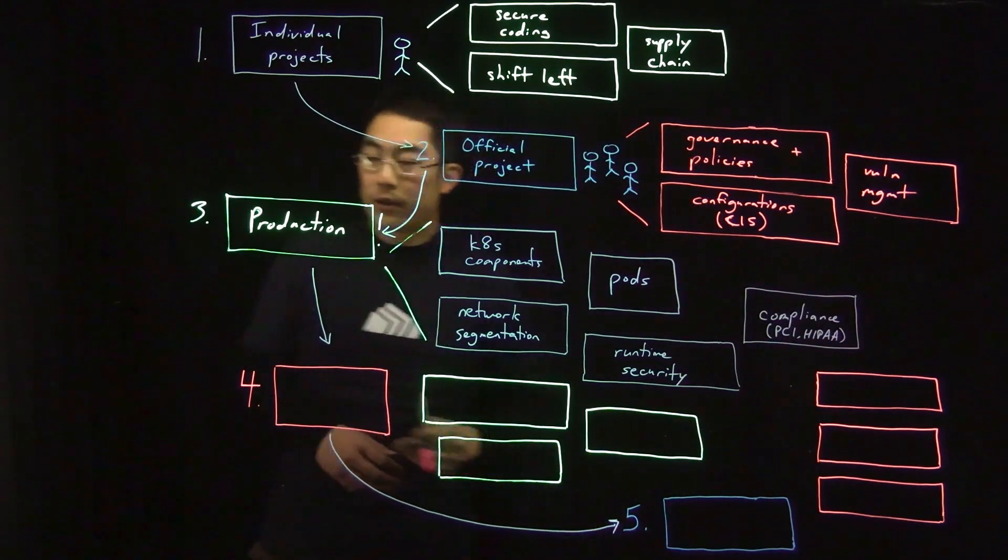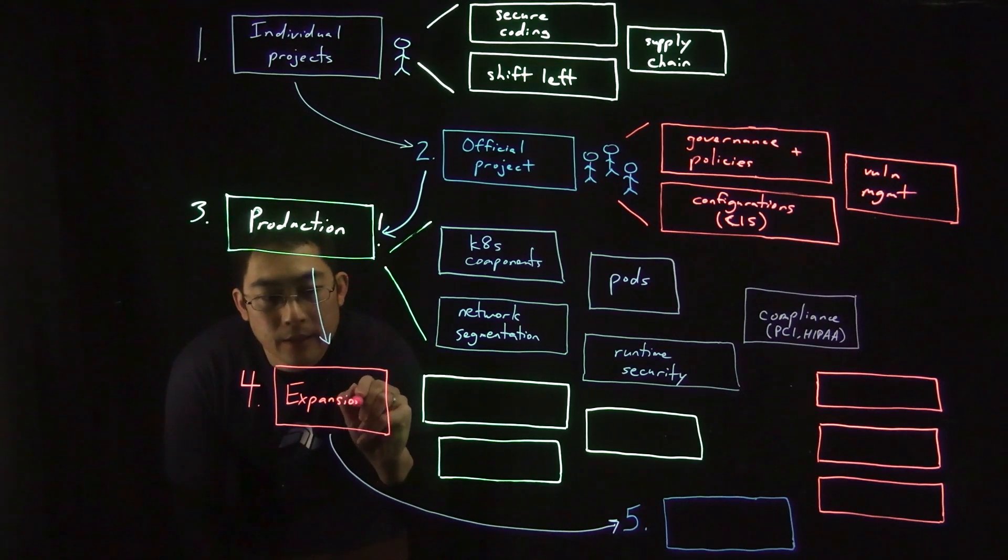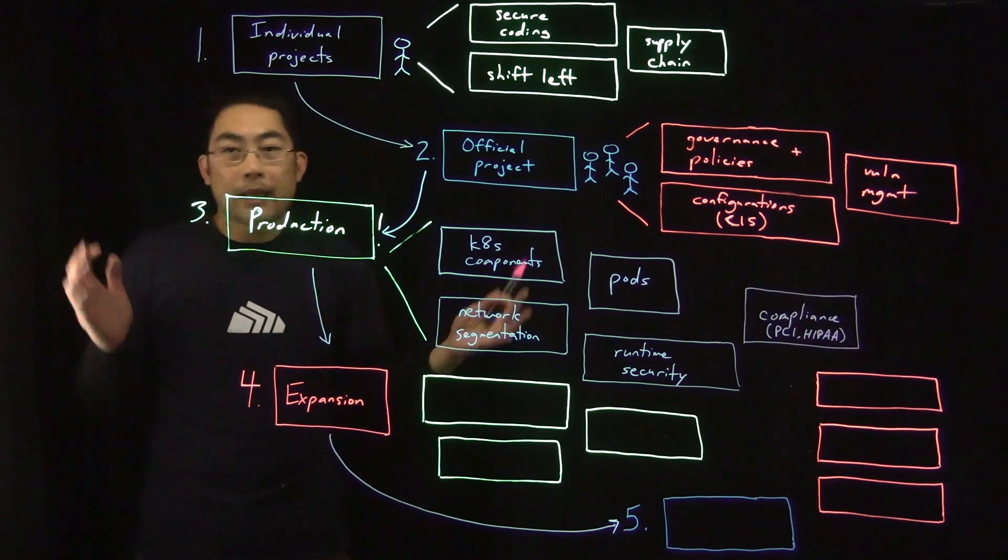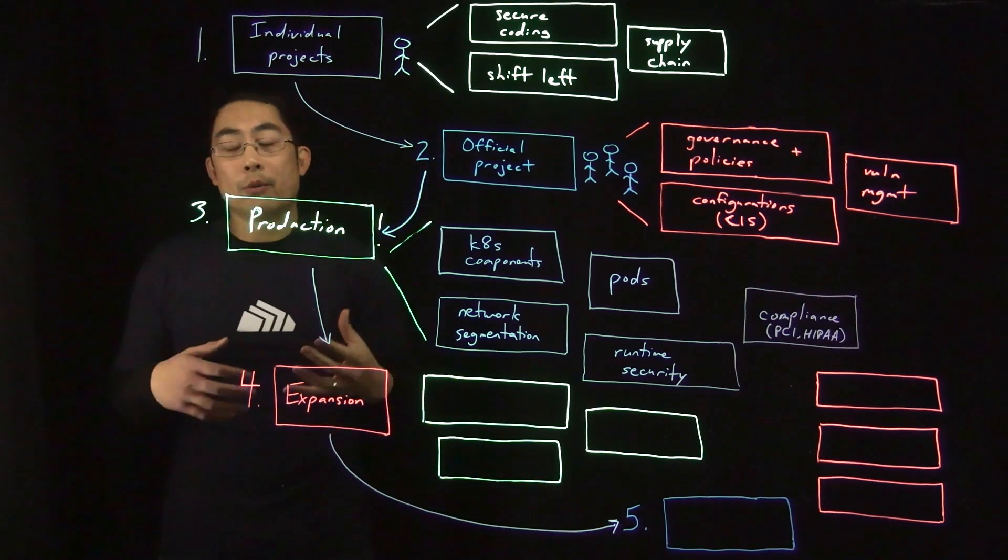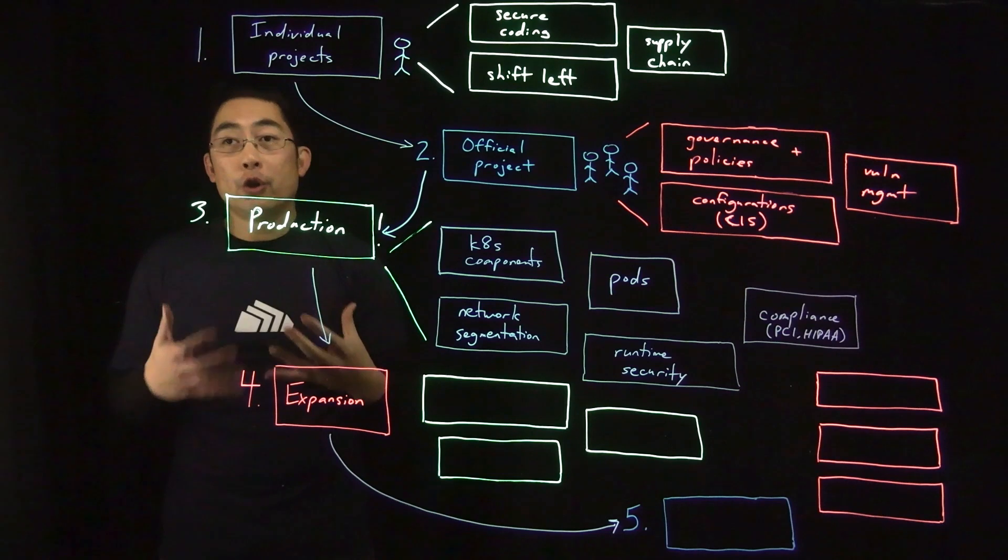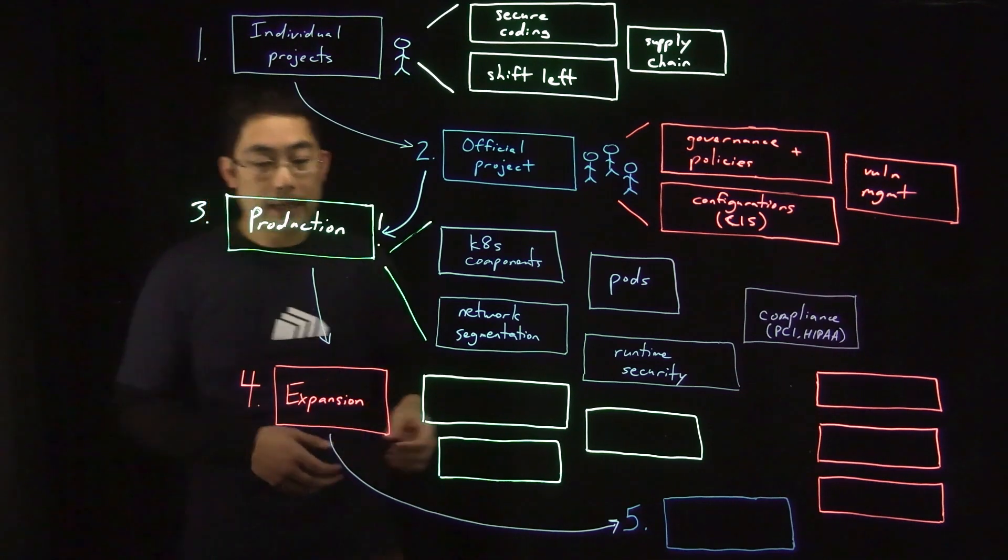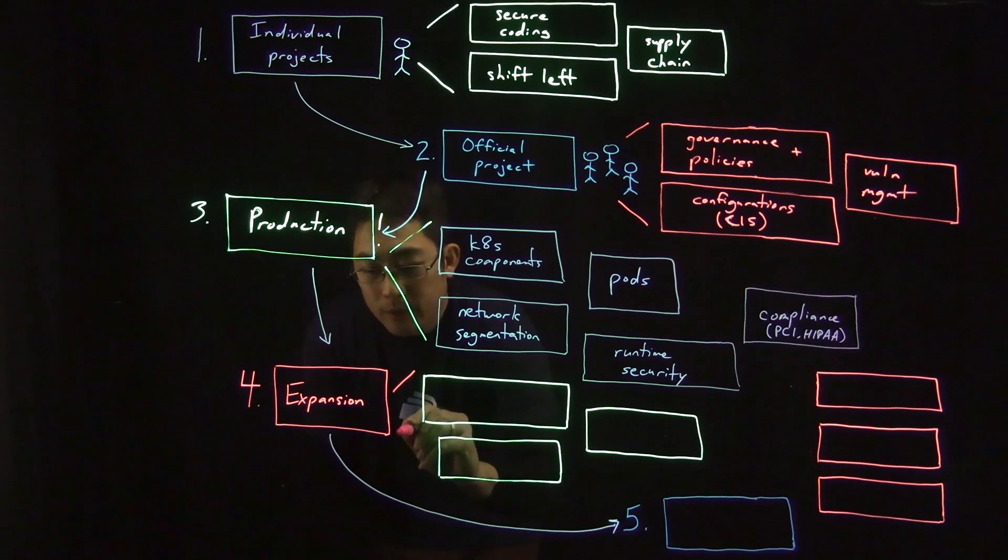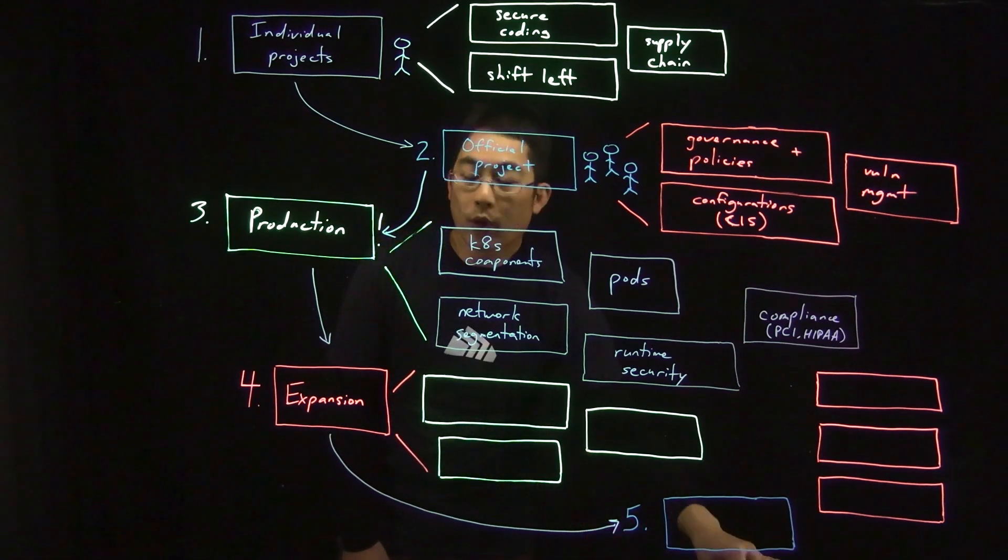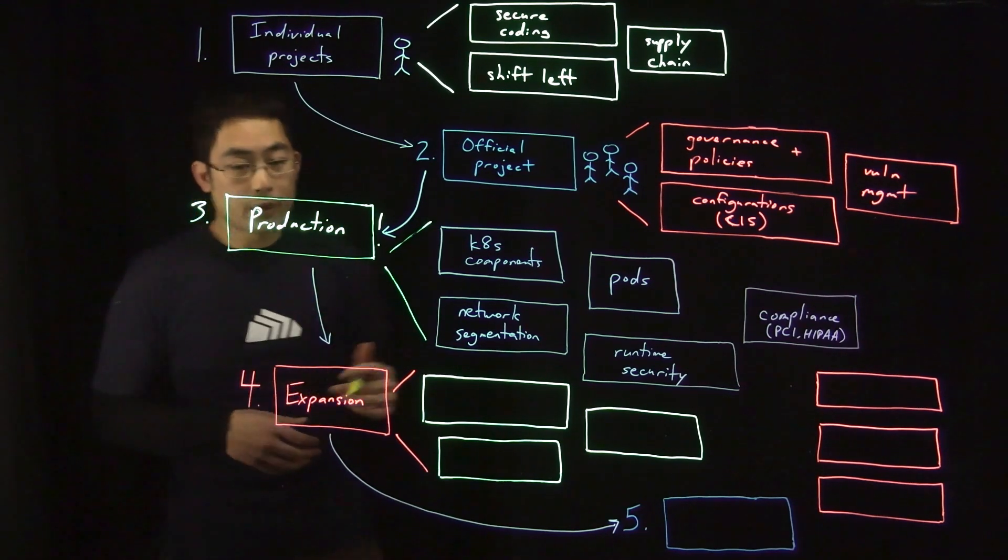The fourth stage of Kubernetes usage is really about expansion and scaling up. At this stage, you might be scaling up that initial application that you ran in production. You might be putting more apps into production. You might be putting all new apps that your organization is building and developing on top of running on Kubernetes. As you scale up, you have multiple teams who are now utilizing the platform. Complexity can become a real problem.